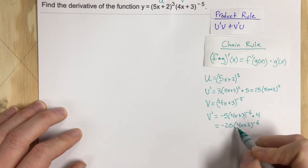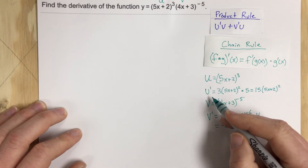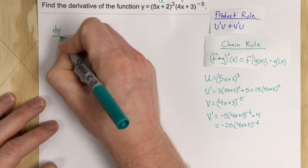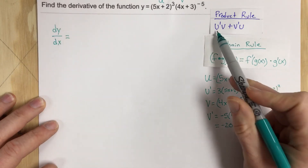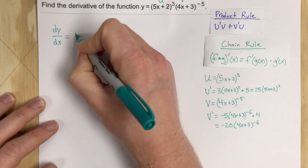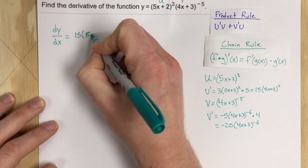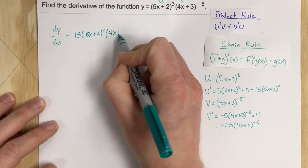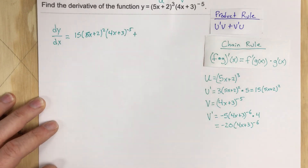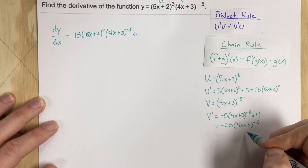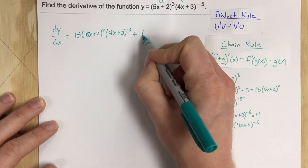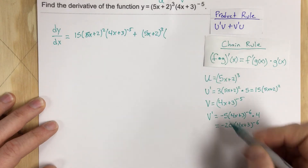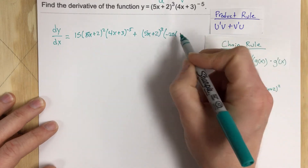Now we can take both derivatives we found and apply the product rule. So dy over dx equals u prime times v, which is 15 times 5x plus 2 squared, times 4x plus 3 to the negative 5; plus u times v prime, which is 5x plus 2 to the third times negative 20 times 4x plus 3 to the negative 6.